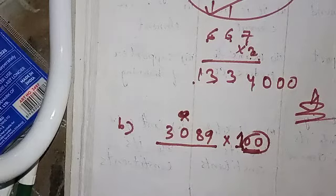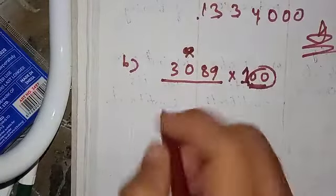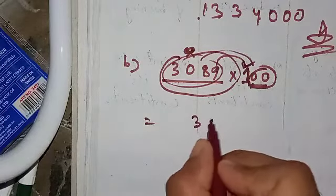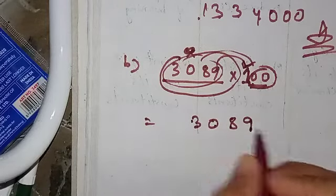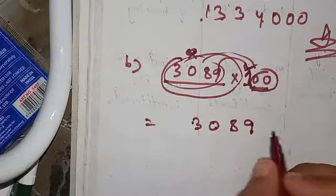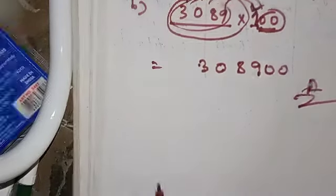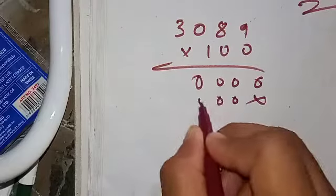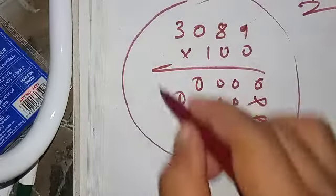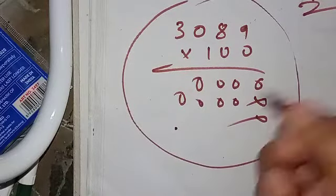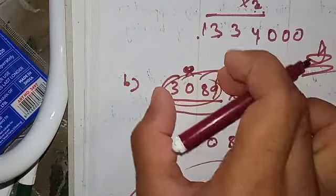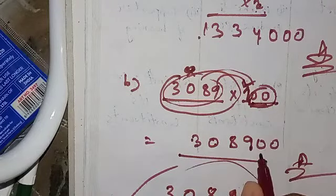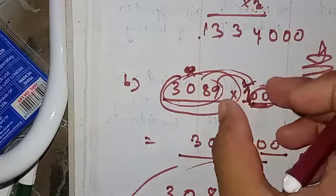We put the two trailing zeros of 100 aside. Now we multiply 3089 × 1, and any number multiplied by 1 is that number itself, so the result is simply 3089. Then we add back the two zeros we set aside, giving 308900. Whenever you multiply any number by 100, 1000, 10000, or any power of 10, just write that number and append as many zeros as the power of 10.